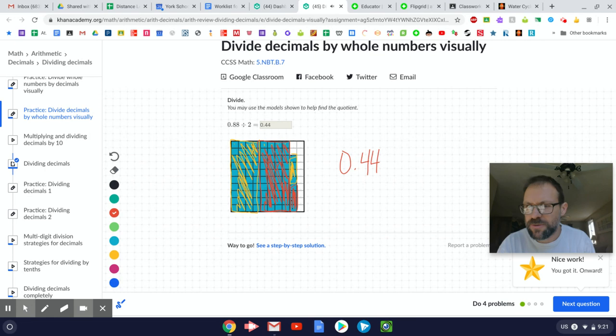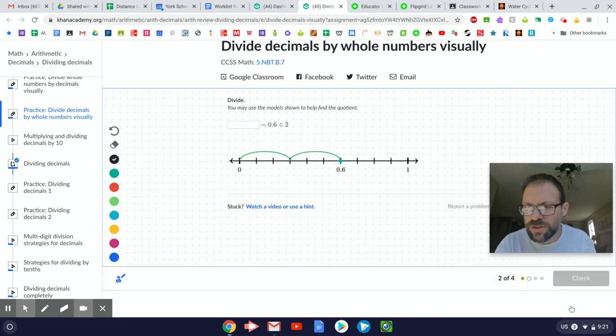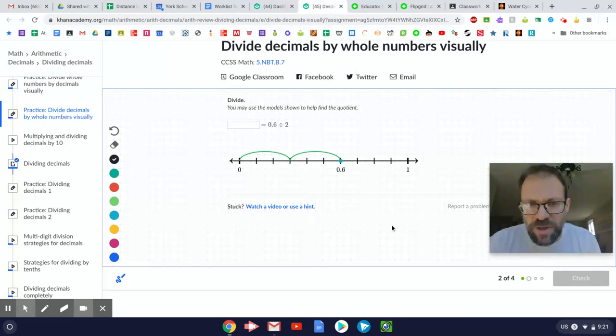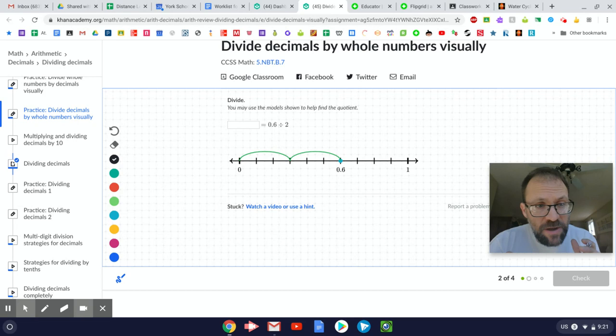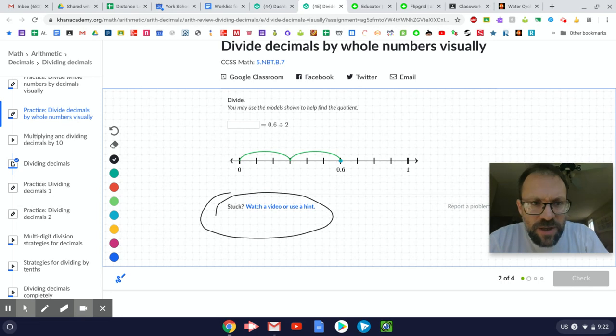Now I'll do one more question with you, okay? Here's another visual model, a number line model, okay? And this follows the other video you watched just before this activity. Now if you didn't watch the videos yet, please do, because they go over. Sal talks about both of these models, the area model and the number line model. And of course, if you are stuck too, you can always watch a video or use a hint, right? Of course.